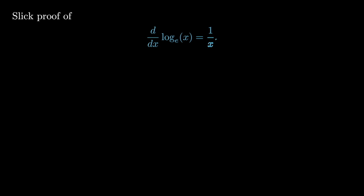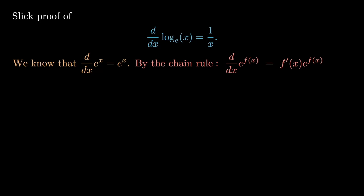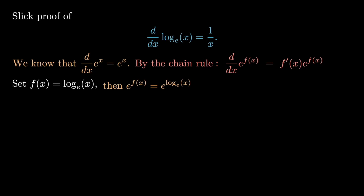So here's the way I'm going to prove that the derivative of the logarithm is 1 over x. We know that the derivative of the exponential is itself, and by the chain rule, if I take the exponential of any differentiable function f, the derivative of e to the f is f prime of x times e to the f of x. Now if I take f to be the logarithm, then the exponential of f is just the exponential of the logarithm, and since they're inverses of each other, we return the function x.